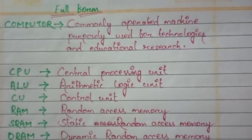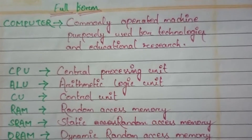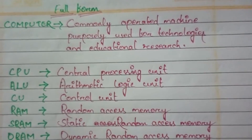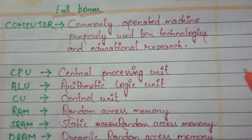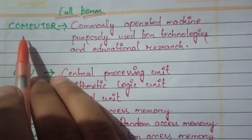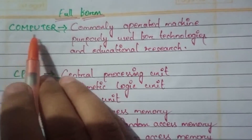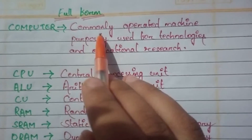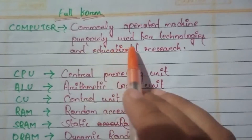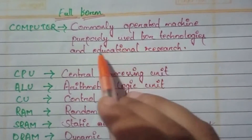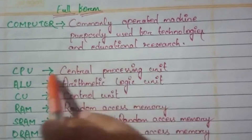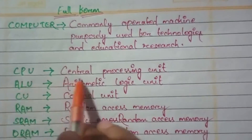Hey everyone, welcome back to the channel. Today in this video we will learn the full forms used in computers. Let's start. First: COMPUTER - Commonly Operated Machine Purposely Used for Technologies and Educational Research. CPU - Central Processing Unit.